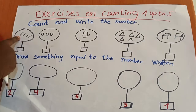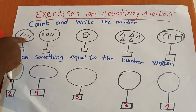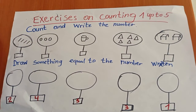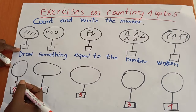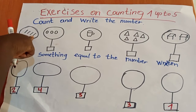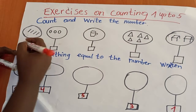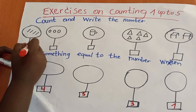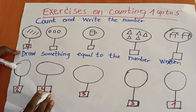One, two, three, four. I am going to write the number four because the oblique lines are four. Number four.